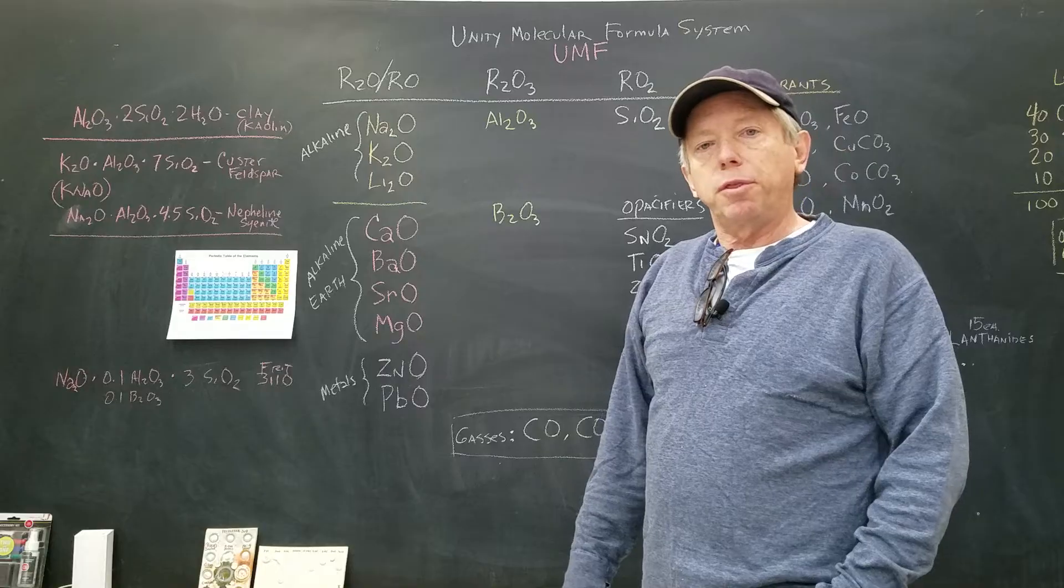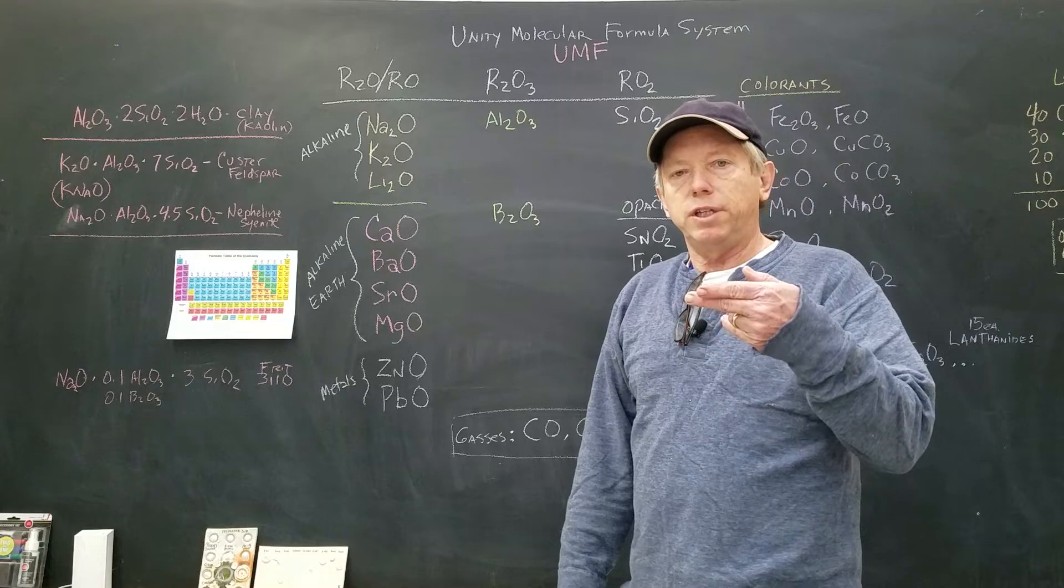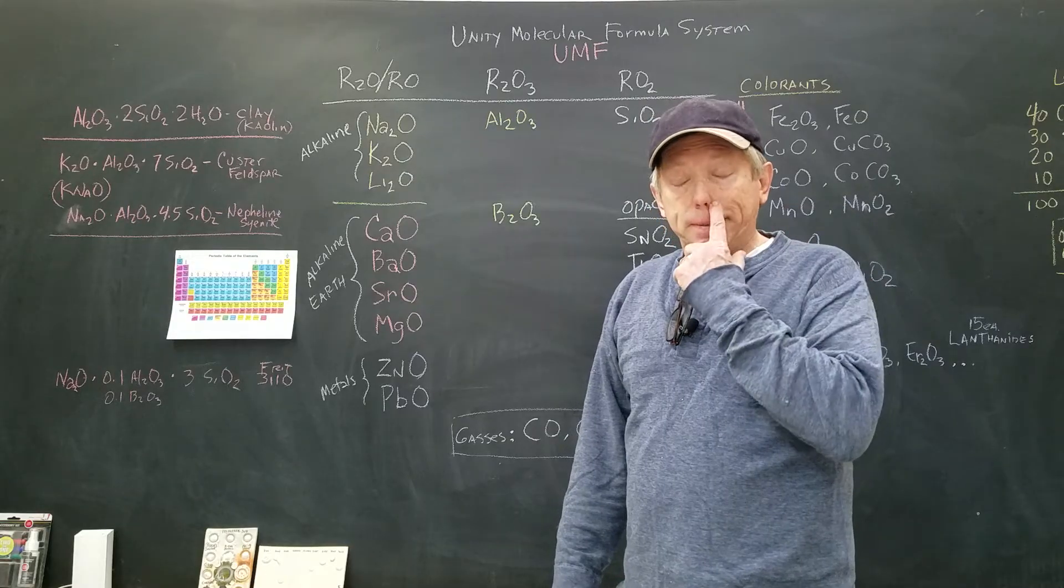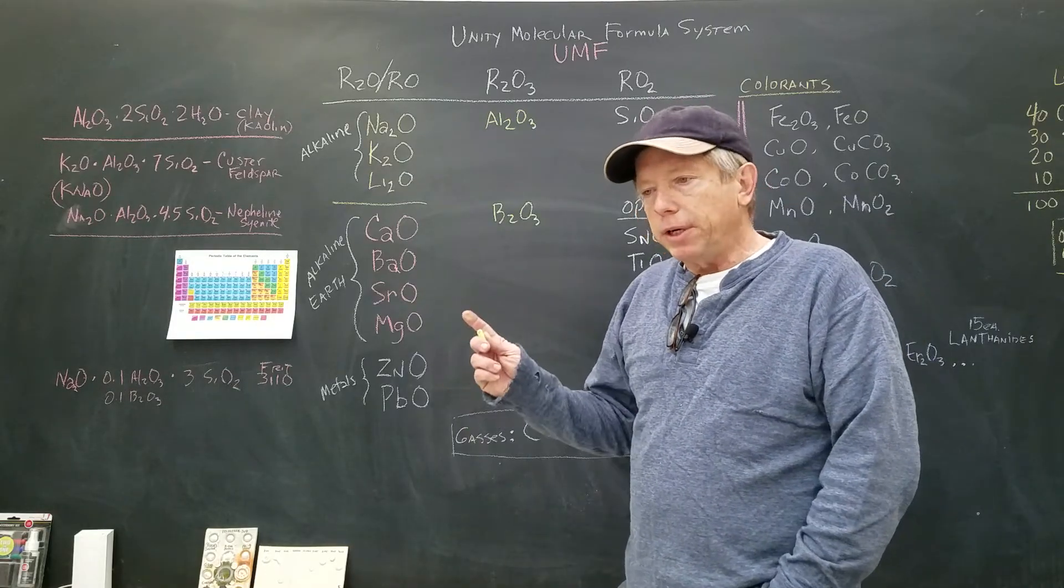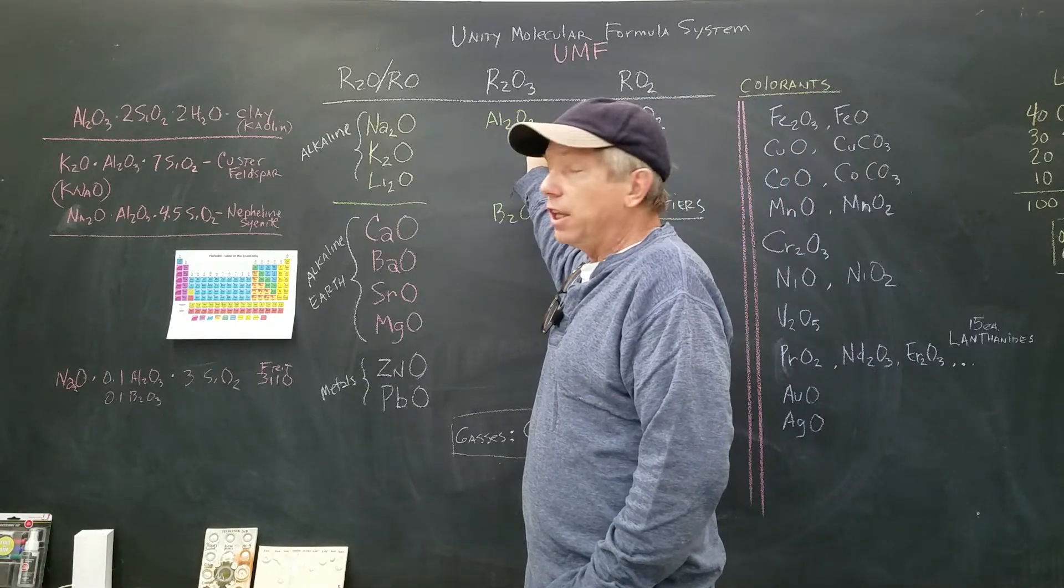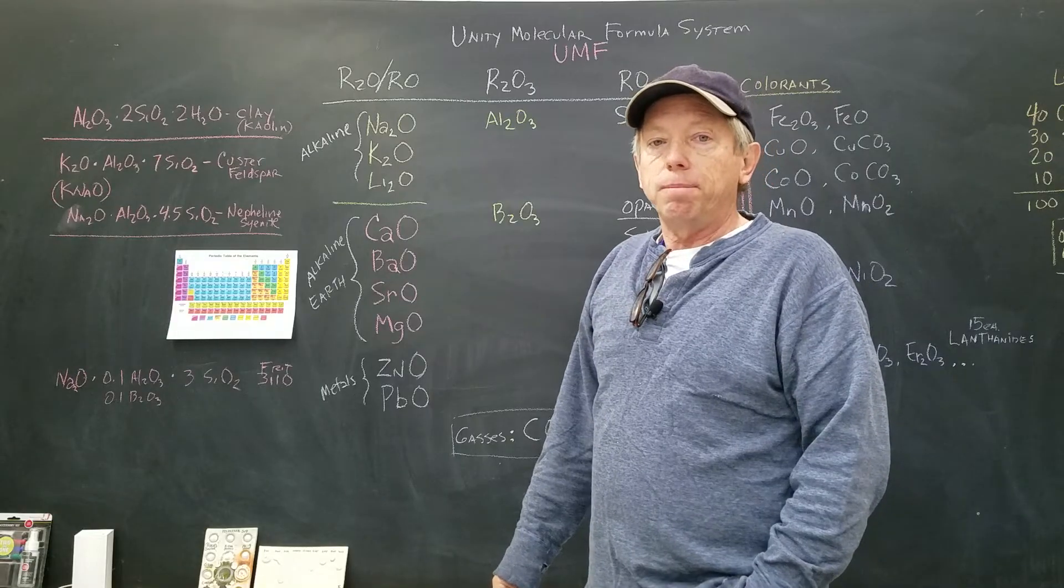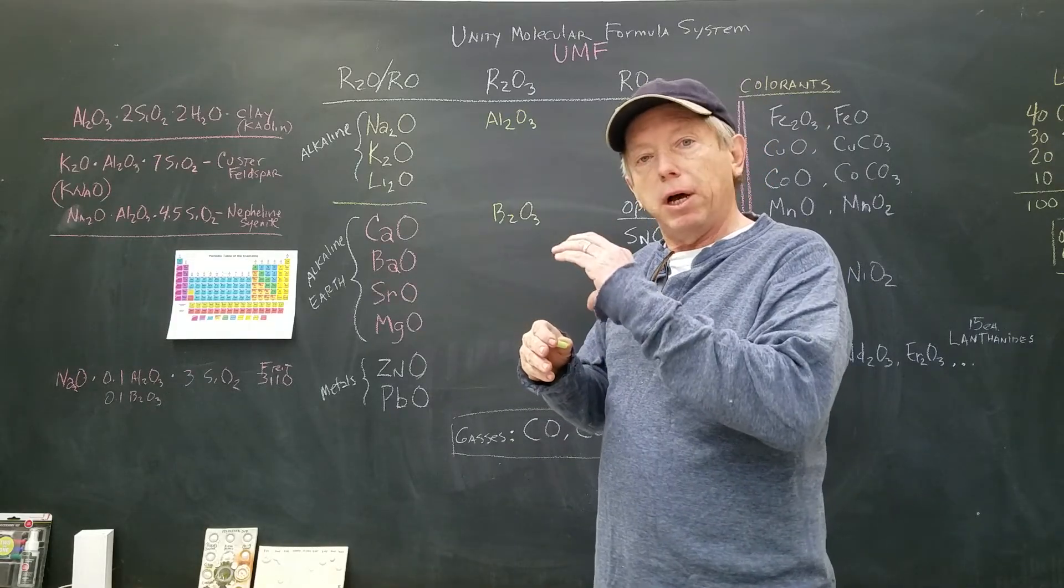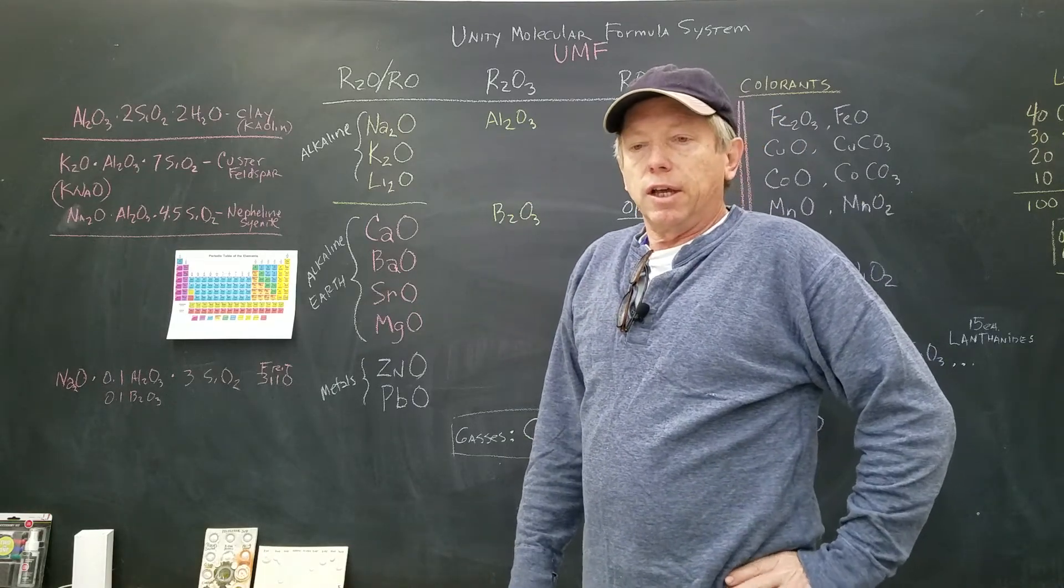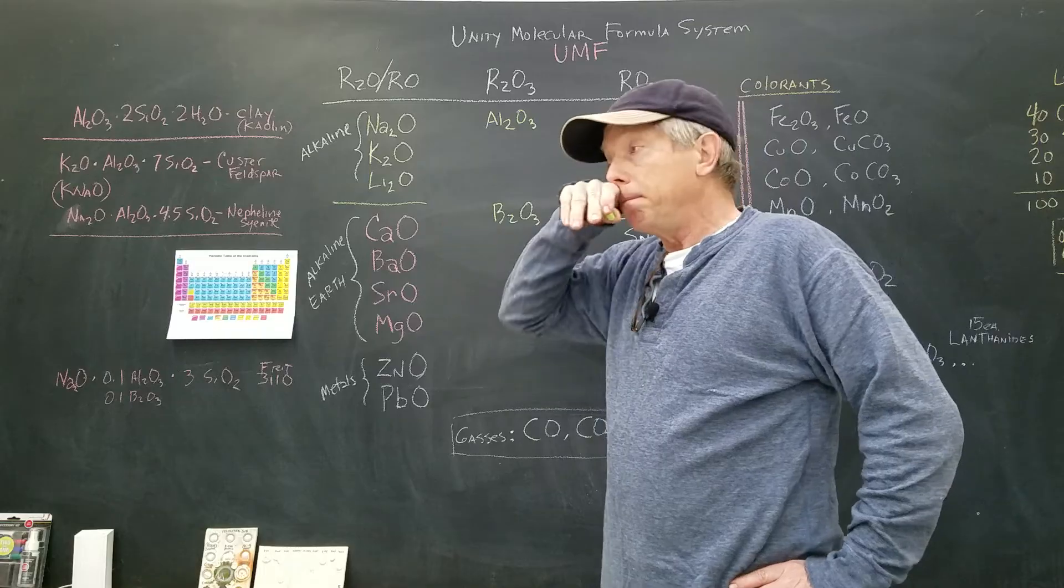The problem with silica is it melts at 3100 degrees Fahrenheit. We fire at 2350 for cone 10, 2232 is cone 6, and about 1878 is cone 05. So we need to bring silica down in its melting, and that's why we will mix silica the glass former with a flux to make it melt lower.